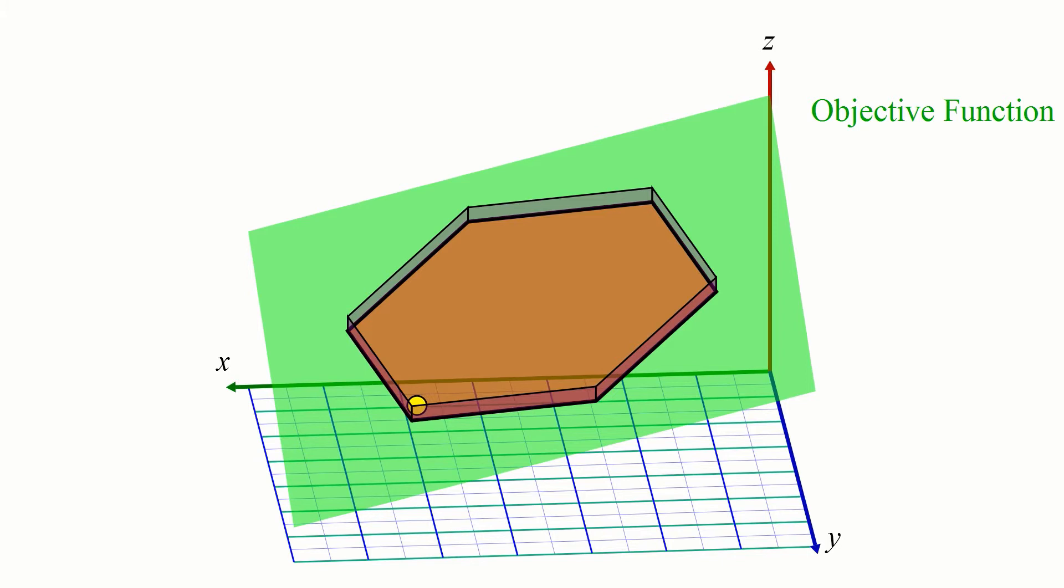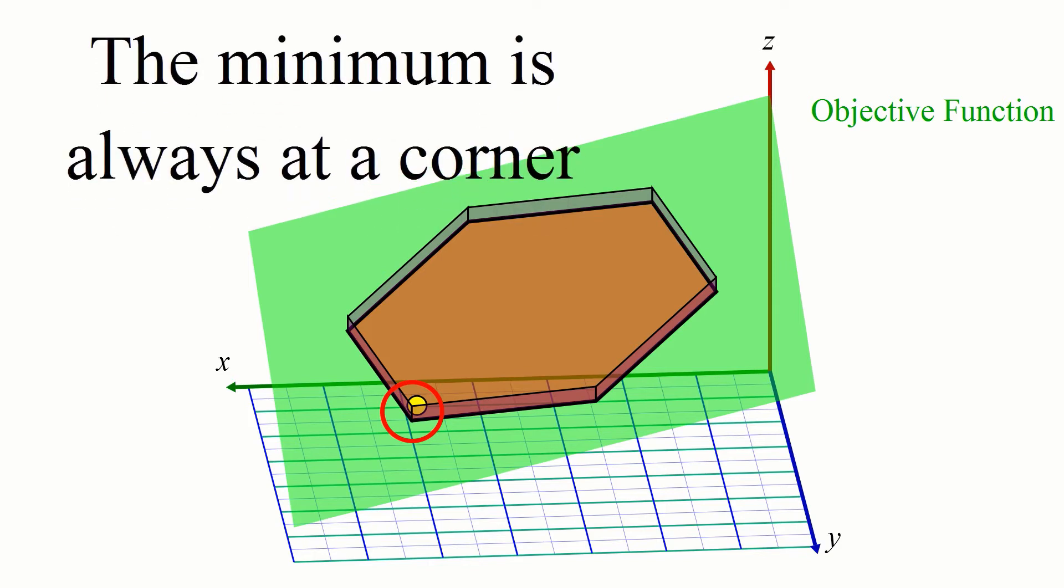This tells us something that might seem unimportant, but is actually really useful. The minimum of any objective function always occurs at a corner of the feasible region.